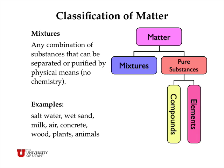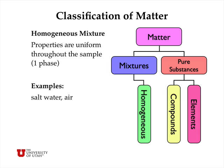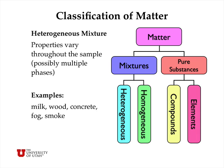Mixtures are any combination of substances that can be separated or purified by physical means, not by chemical means. Examples are salt water, which could be purified by distillation, or wet sand that could be purified by evaporation, or milk, air, concrete — anything that can be separated by physical means. These mixtures can be further classified as homogeneous mixtures, which have uniform properties throughout the sample in a single phase, like salt thoroughly dissolved in water or air; or heterogeneous mixtures, where the properties vary throughout the sample, possibly in multiple phases — examples include milk, wood, concrete, fog (a suspension of liquid droplets in gaseous air), or smoke (a suspension of solid particles in air).